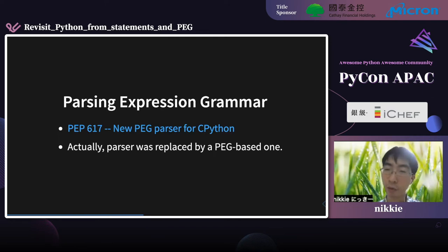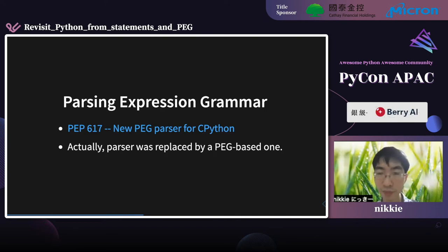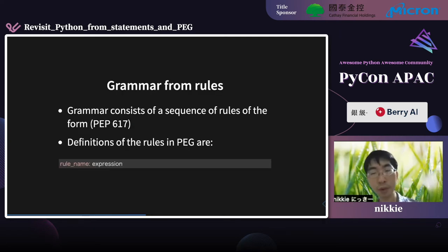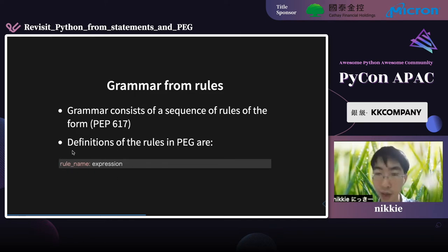Next, Part 2. PEG stands for Parsing Expression Grammar. PEP 617 introduced a new PEG parser for CPython. Since Python 3.9, the parser has actually been quietly replaced by a PEG-based one. In both PEG and pre-PEG, a sequence of rules of the form are defined as the grammar. In the definition of a rule in PEG, the rule name comes first, followed by a colon, and then an expression.